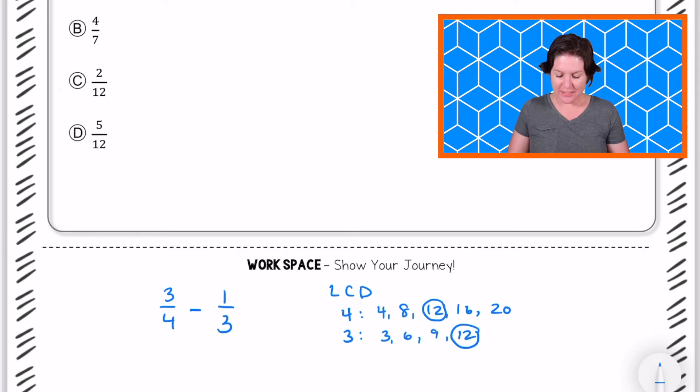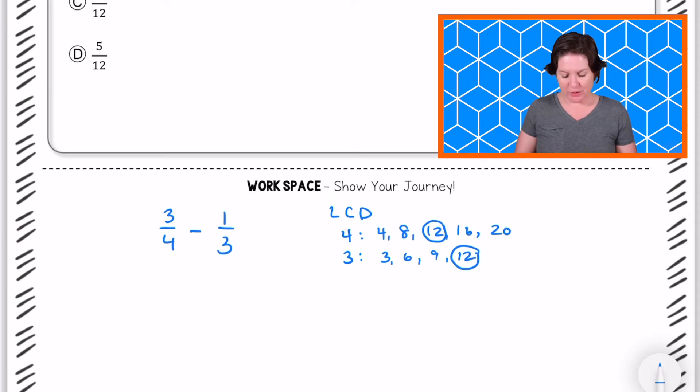The least common denominator, the lowest common denominator that they have in common, the denominator they have in common, would be twelve. So my next step would be to rewrite these equivalent fractions. So yes, we're changing three-fourths into a fraction with a denominator of twelve, but it's an equivalent fraction. So let's see how we got there.